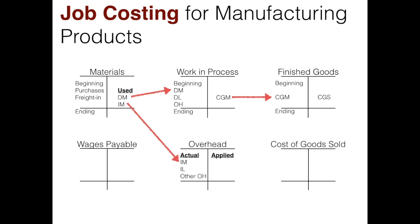Now let's turn to labor. In financial accounting you would debit wages expense and credit wages payable when wages are incurred. But in a manufacturing process, product costs do not get expensed until the product is sold — and that includes direct and indirect labor. So we credit wages payable, but instead of debiting wages expense, we debit work in process for direct labor and debit overhead for indirect labor.